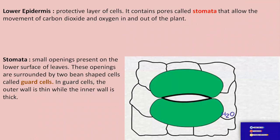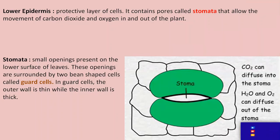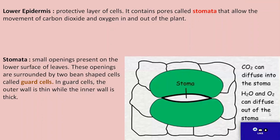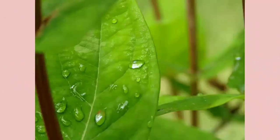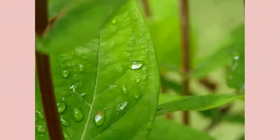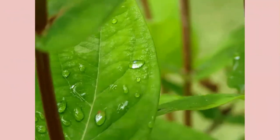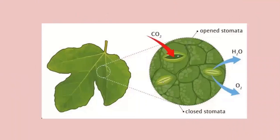You can see that the leaf structure is designed in such a manner to carry out photosynthesis in the best possible way. Let us quickly have a recap. The leaves have a broad, flat and wide surface to absorb maximum sunlight, and they bear tiny pores known as stomata to ease the exchange of gases between the leaf and the atmosphere.